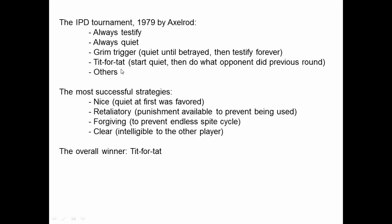All these strategies competed with each other in an iterated Prisoner's Dilemma situation. The most successful strategies — those with the highest payoff after many rounds — shared key features: they were nice (quiet at first was favored), retaliatory (punishment was available), forgiving (they had a mechanism to return to being quiet after testifying), and clear (overly complicated strategies that opponents couldn't learn didn't do well). The strategy that did the best overall was tit for tat.